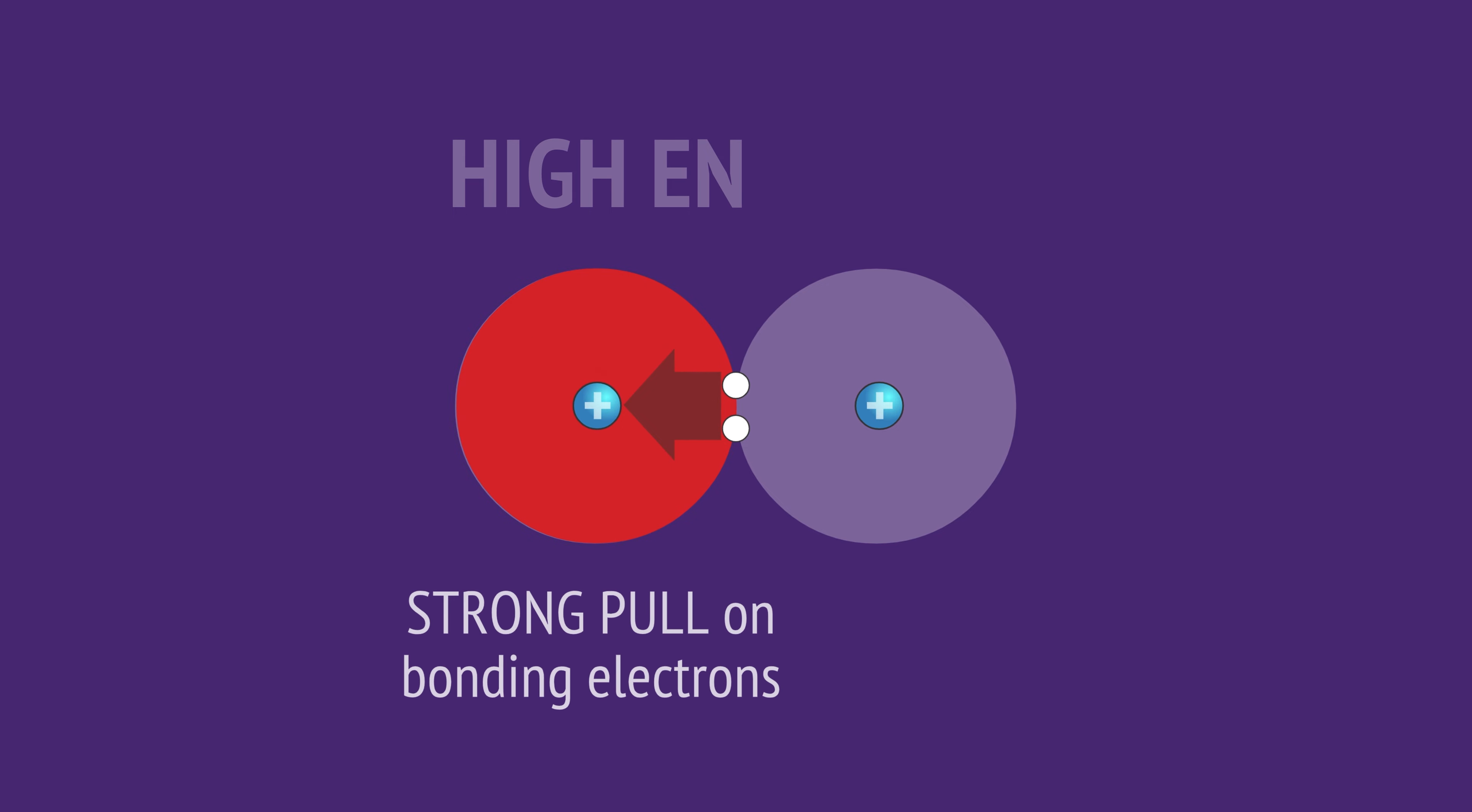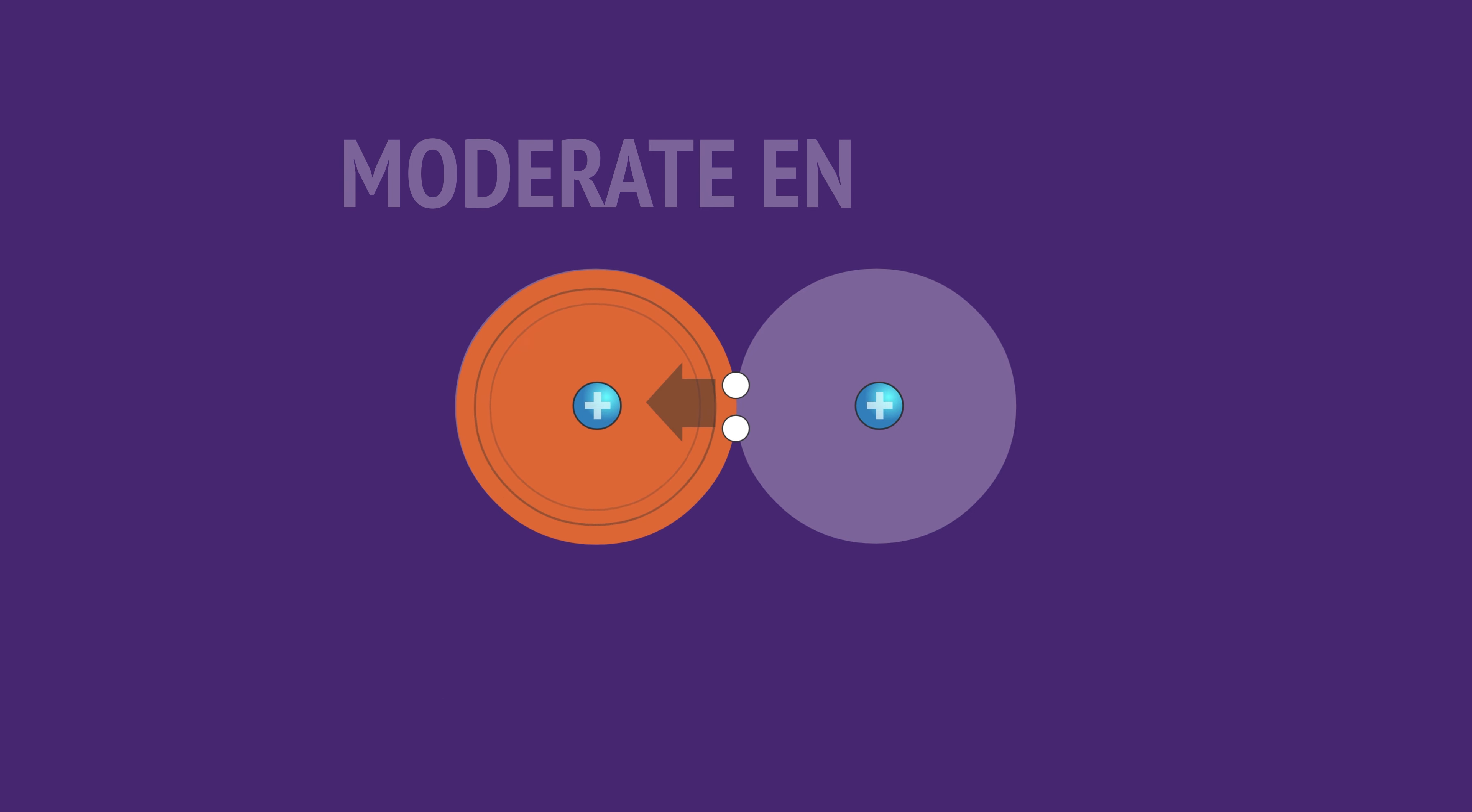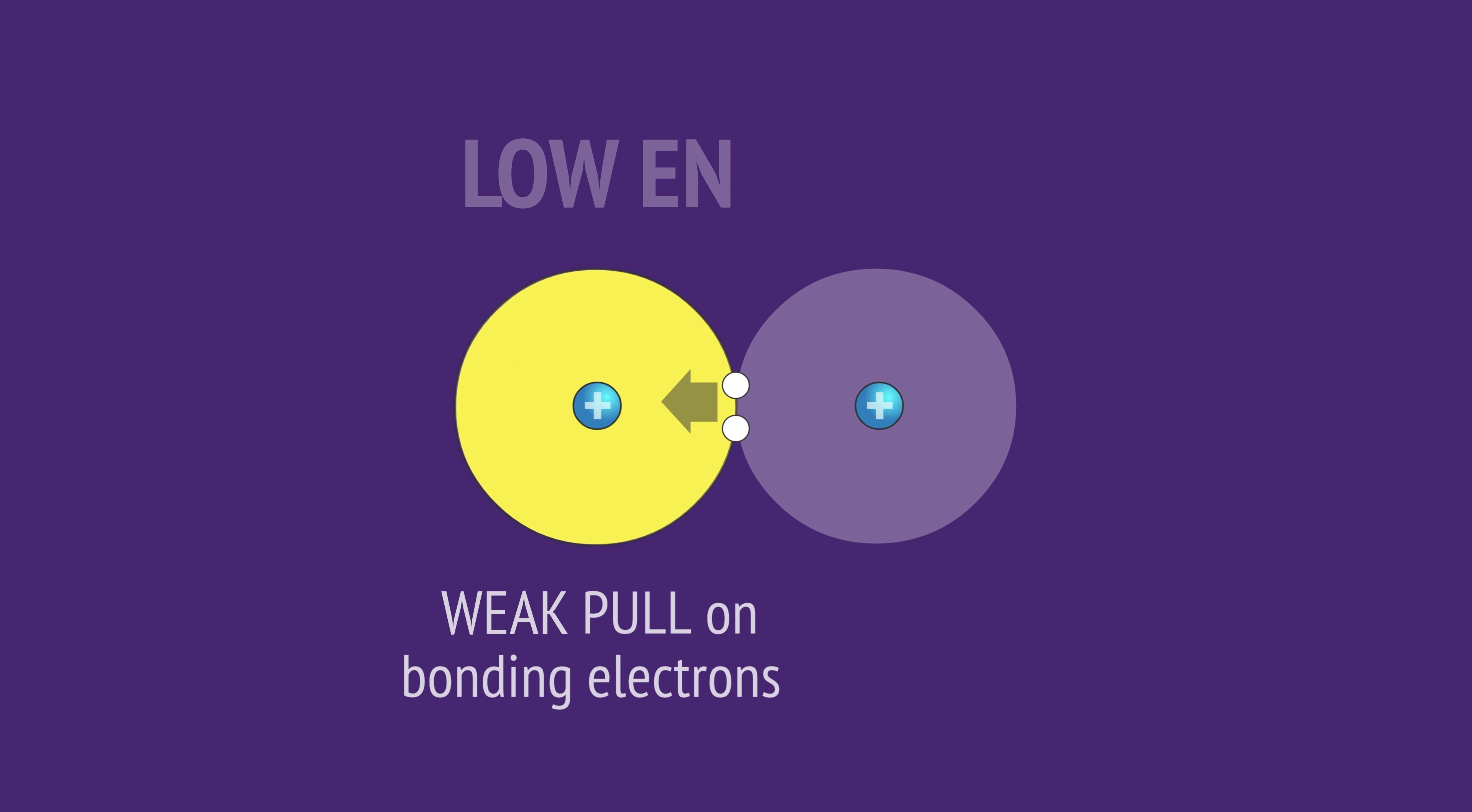An atom with a high electronegativity exerts a strong pull on its bonding electrons. An atom with a moderate electronegativity exerts a moderate pull on these electrons, and an atom with a low electronegativity exerts only a very weak pull.